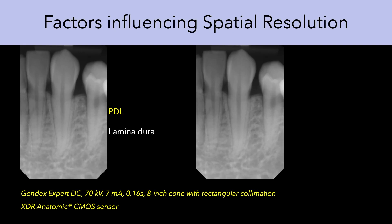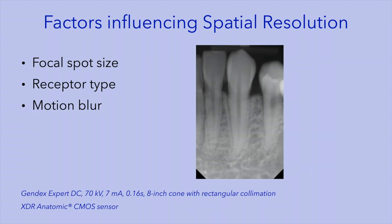When we do intraoral imaging, we look at fine detailed structures. In the radiograph shown here, you see the periodontal ligament space, seen as a radiolucent line, and the adjacent cortical bone or laminar dura, seen as a thick white line. The detailed assessments that we make on intraoral radiographs requires high resolution. The spatial resolution of a radiographic image is influenced by the focal spot of the x-ray tube, the type of receptor used, and by any motion blur from patient or receptor movement.